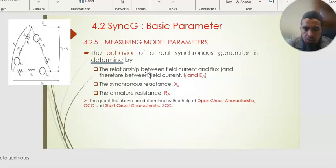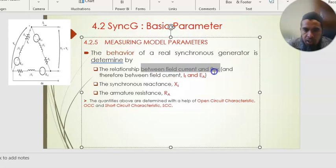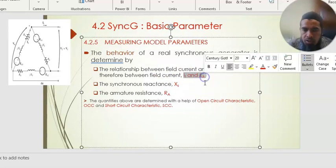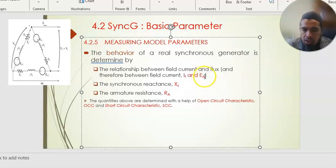So, we're going to perform the test to investigate performance of our synchronous generator. The behavior of the real synchronous generator will depend on the relationship between field current and flux, field current and also the internal generated voltage EA, and the flux and the expected EA. It will also depend on the value of synchronous reactance Xs and depends on the armature resistance Ra. The quantities can be determined by using open circuit test OCC and also SCC short circuit test.